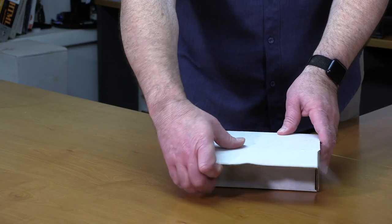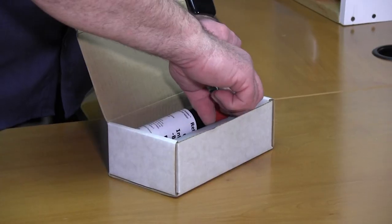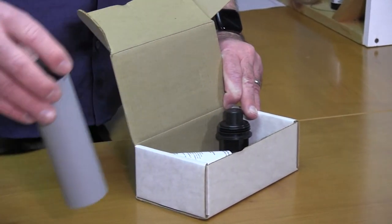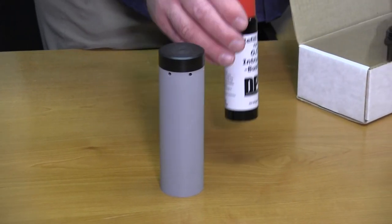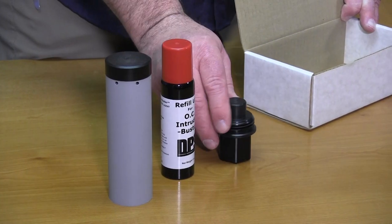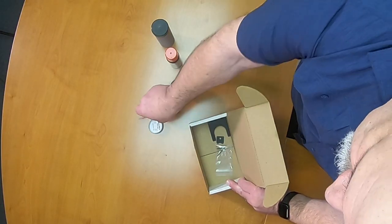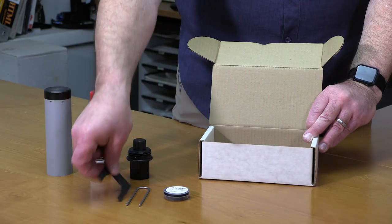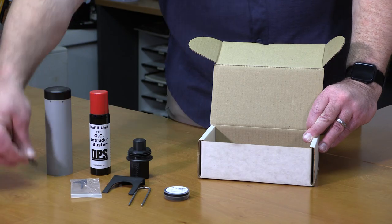The OC Intruder Buster Kit comes with everything you need to get started. First is the OC Intruder Buster Housing. Next, we have a DPS OC Refill, the activator, ballistic trip line, safety pin, wall mount, mounting screws, and the sear.